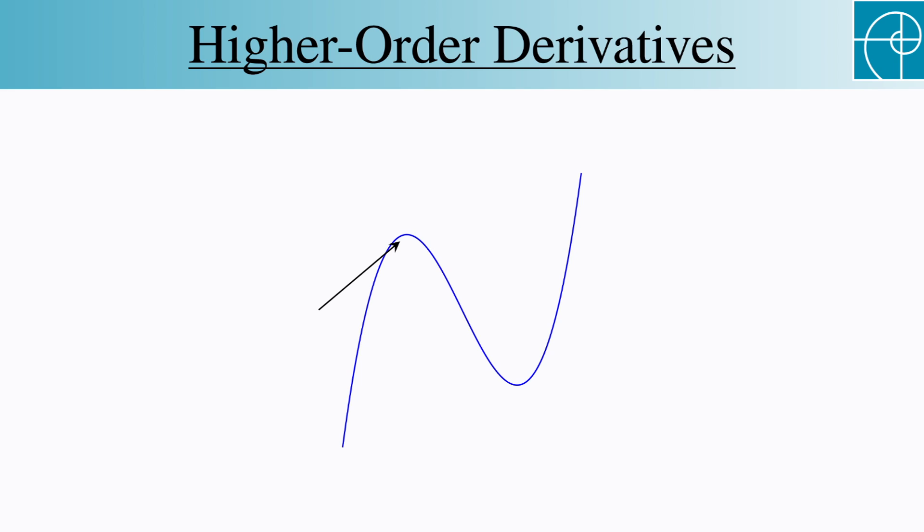But now we can use concavity. This is a local maximum because the first derivative is 0, and the second derivative is negative, which means the graph is concave down.